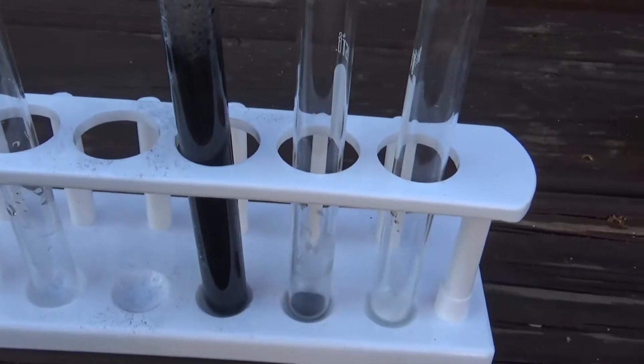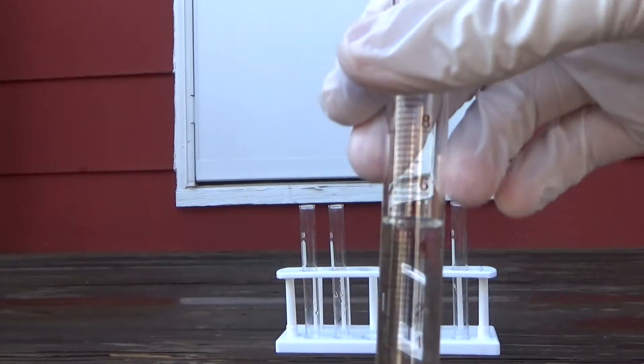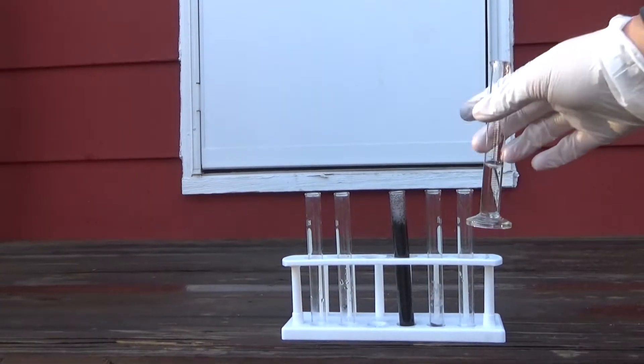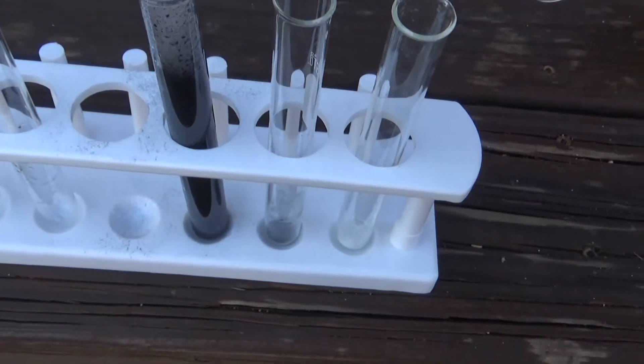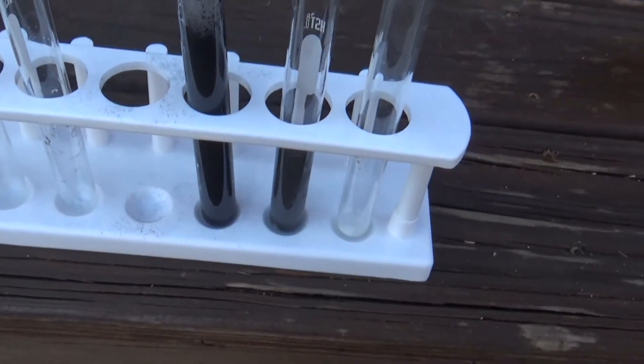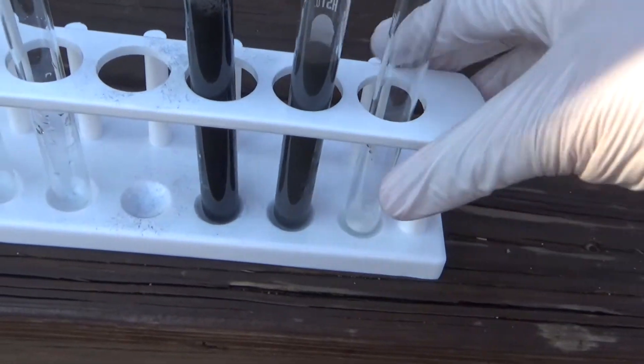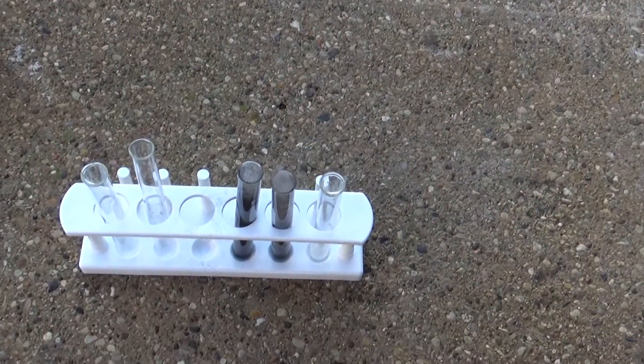Next up is the manganese dioxide. Five more milliliters into the manganese dioxide we go. Let's see how this one does. Here we go. Three, two, one. Oh yeah, that's way better. I'm putting this onto the ground. It's going to spill over. Oh, maybe not.